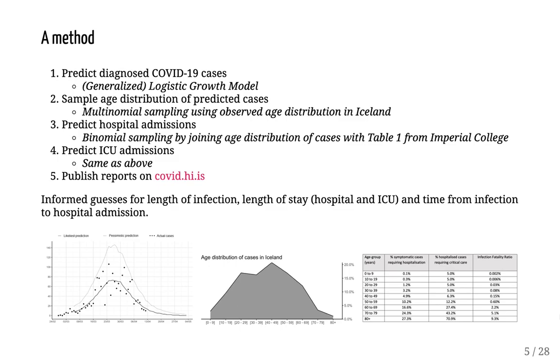And that is what we did. We utilized the logistic growth model to predict the diagnosed cases. The logistic growth model, in spite of having to be symmetric, worked well in Iceland as it turned out that the growth of COVID-19 in Iceland was very symmetric. Once we have this prediction of diagnosed cases, we use the age distribution of cases to split the prediction up into different age groups by sampling from a multinomial distribution. Once we have this age-stratified prediction of diagnosed cases, it is a simple matter of using binomial sampling to simulate hospital admissions and ICU admissions by using the paper from Imperial College.